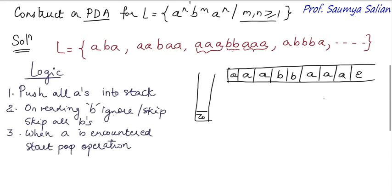So the logic is: push all A's to the stack, perform skip operation for all B's, and when an A is encountered after reading all B's, start the pop operation. Let's begin the PDA construction. This is our example string, and this is our stack, which initially has Z0 as its topmost element. We start from state Q0.